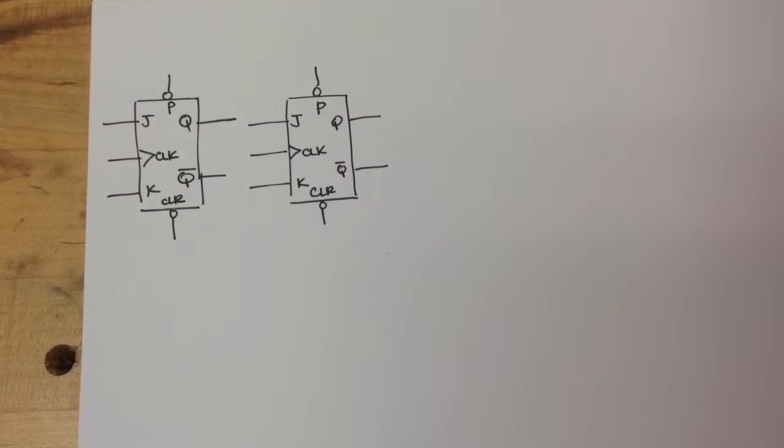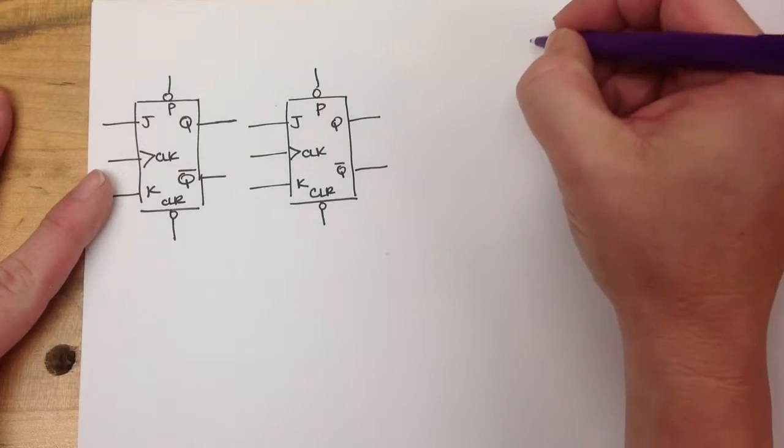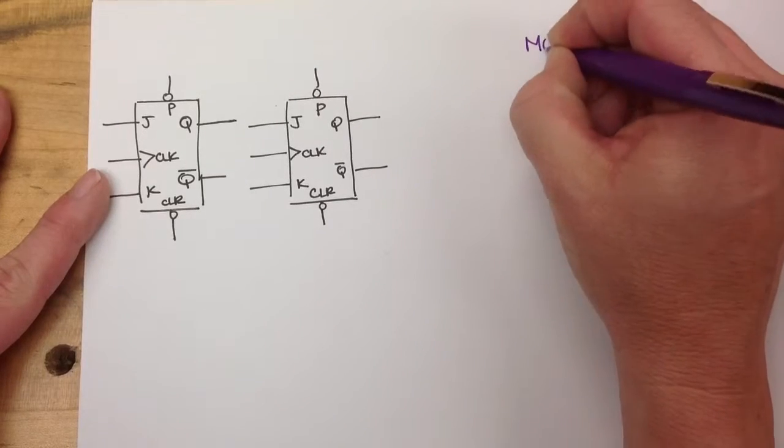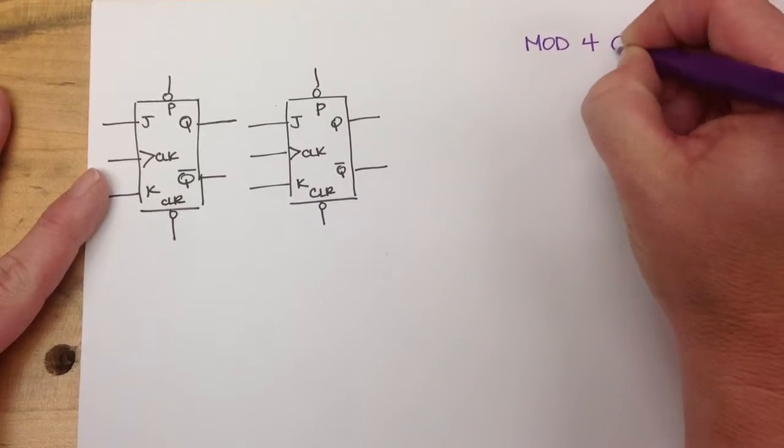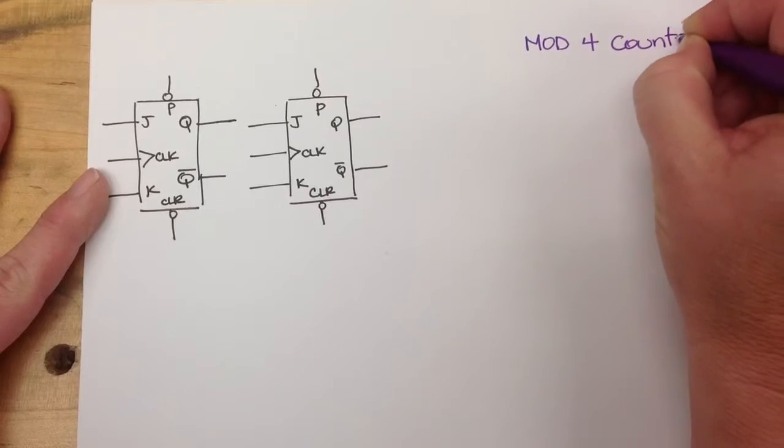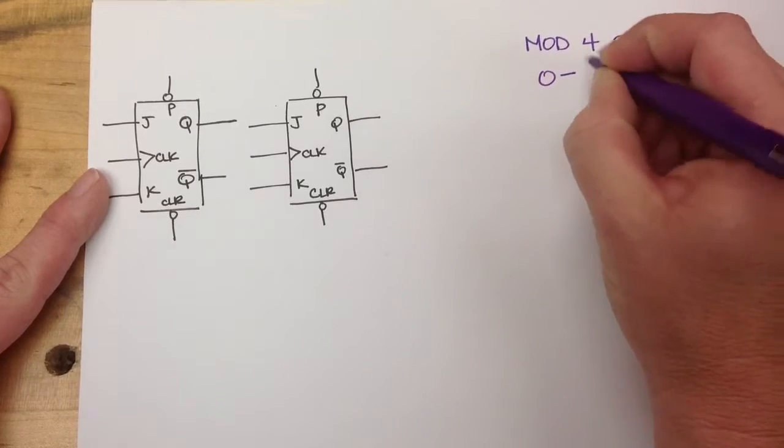So in the last video, I showed you how to make a mod 2 counter, and that would count from 0 to 1. So this time, I want to make what we call a mod 4 counter, and I really want to count from 0 to 3.